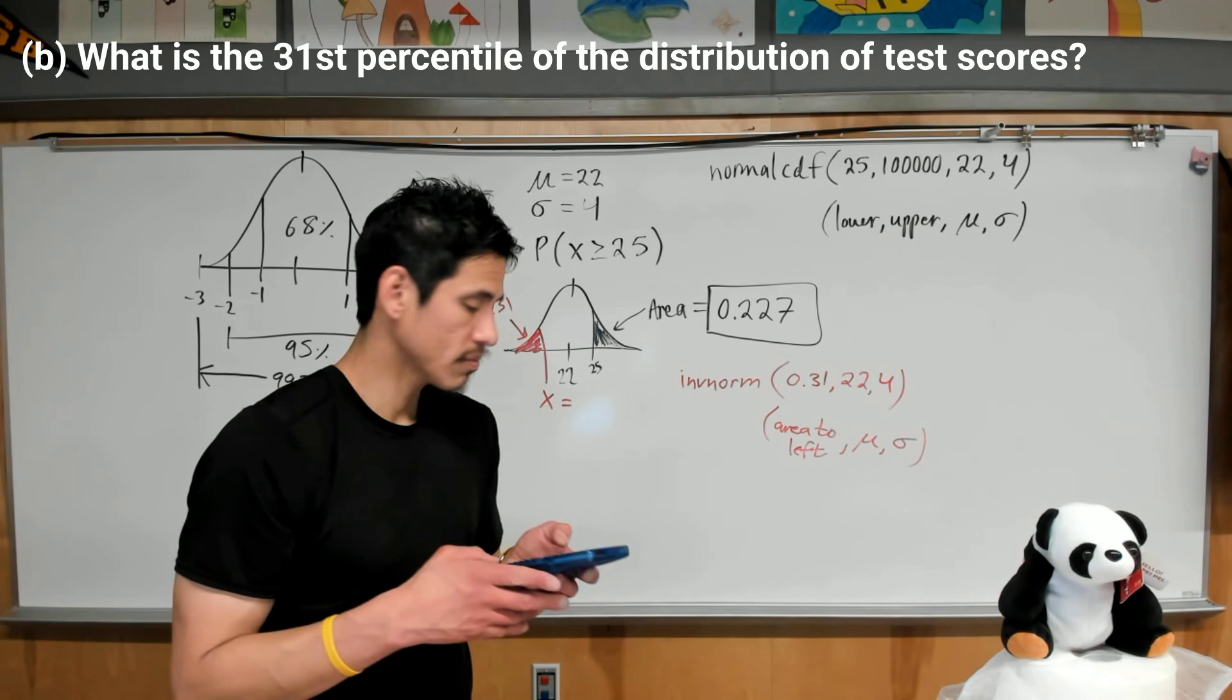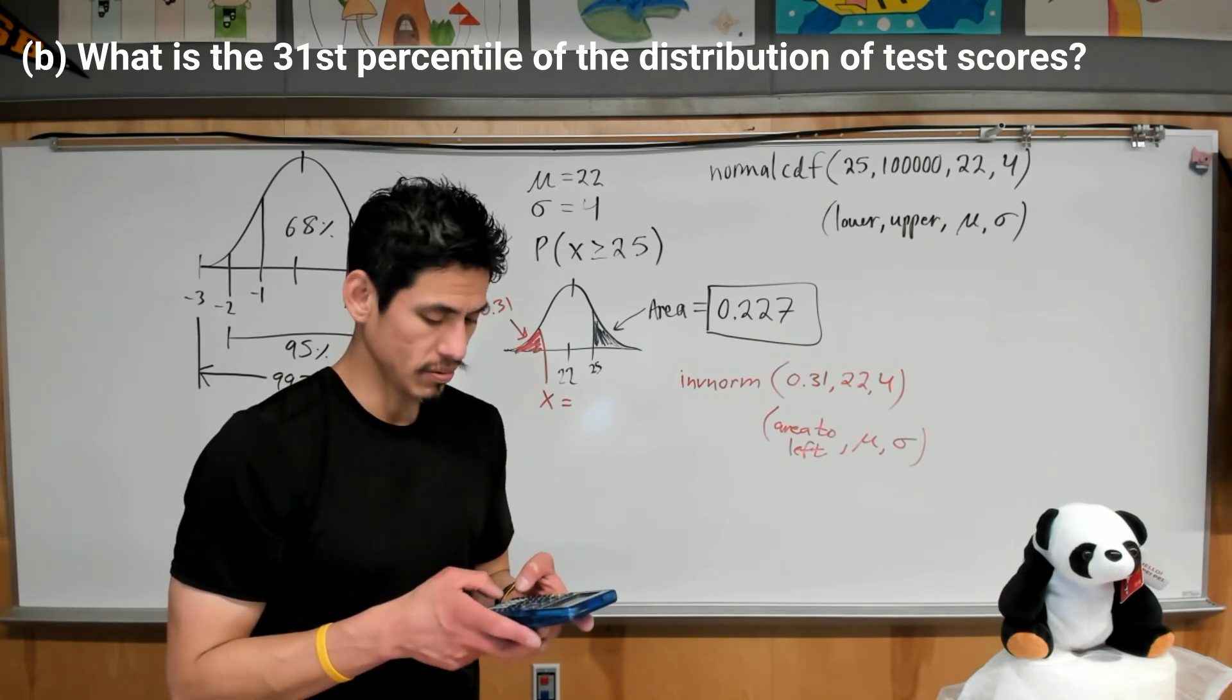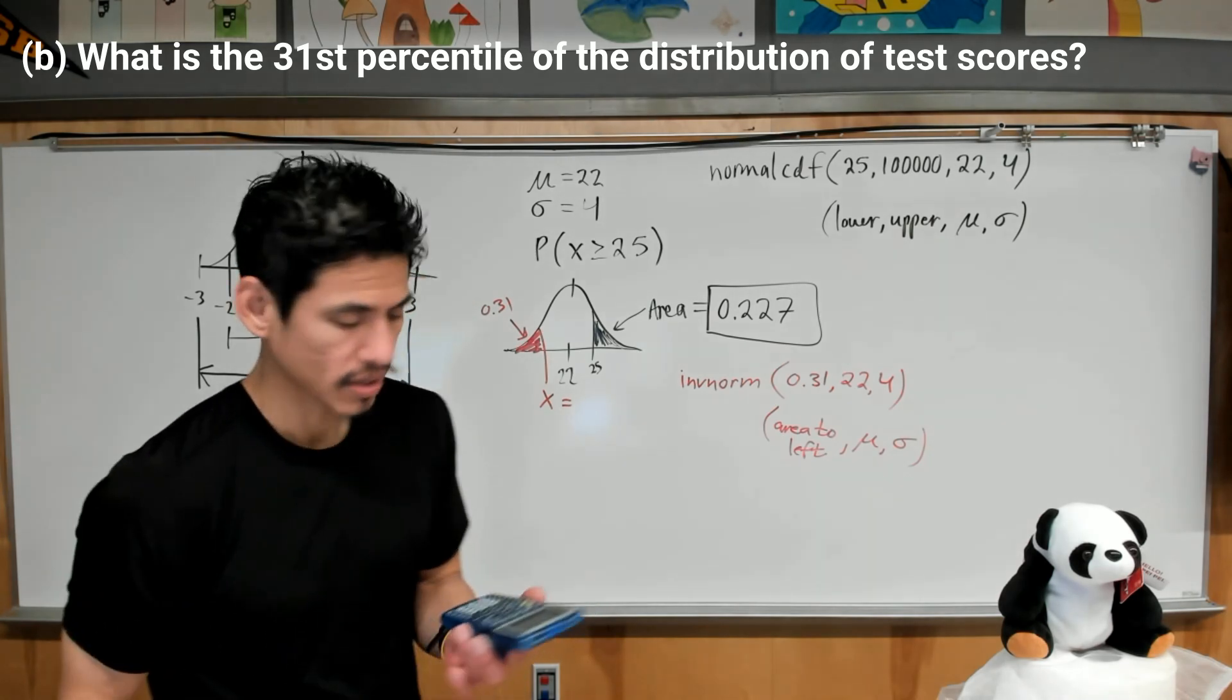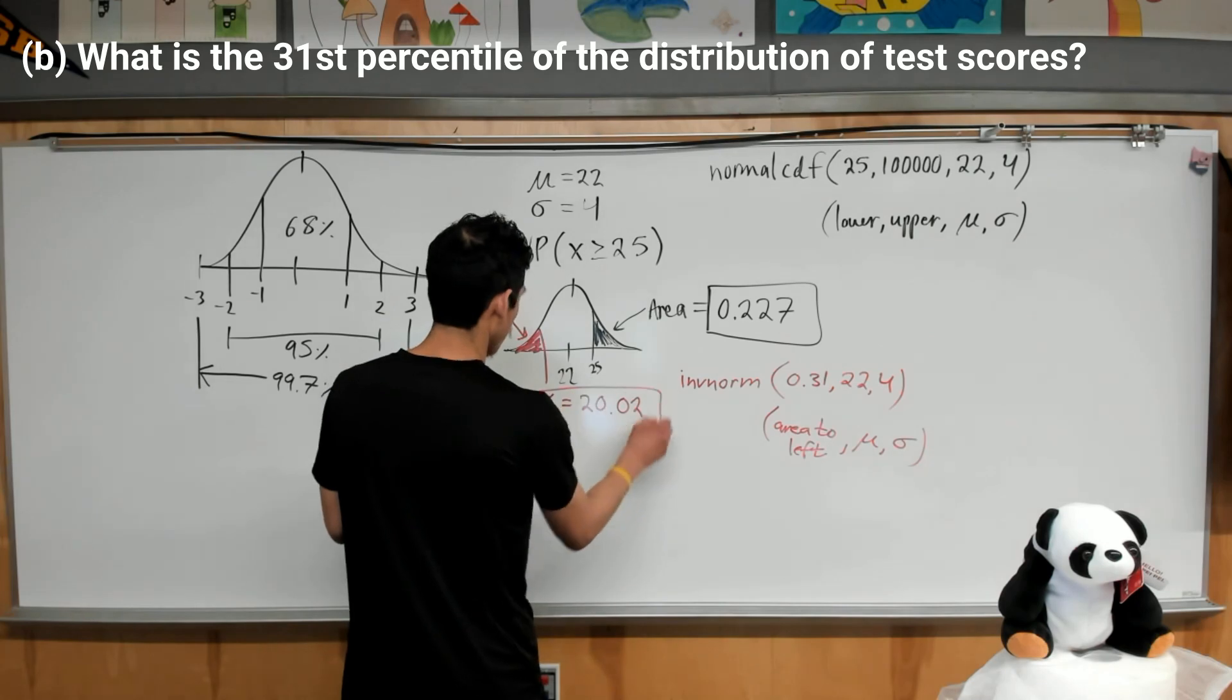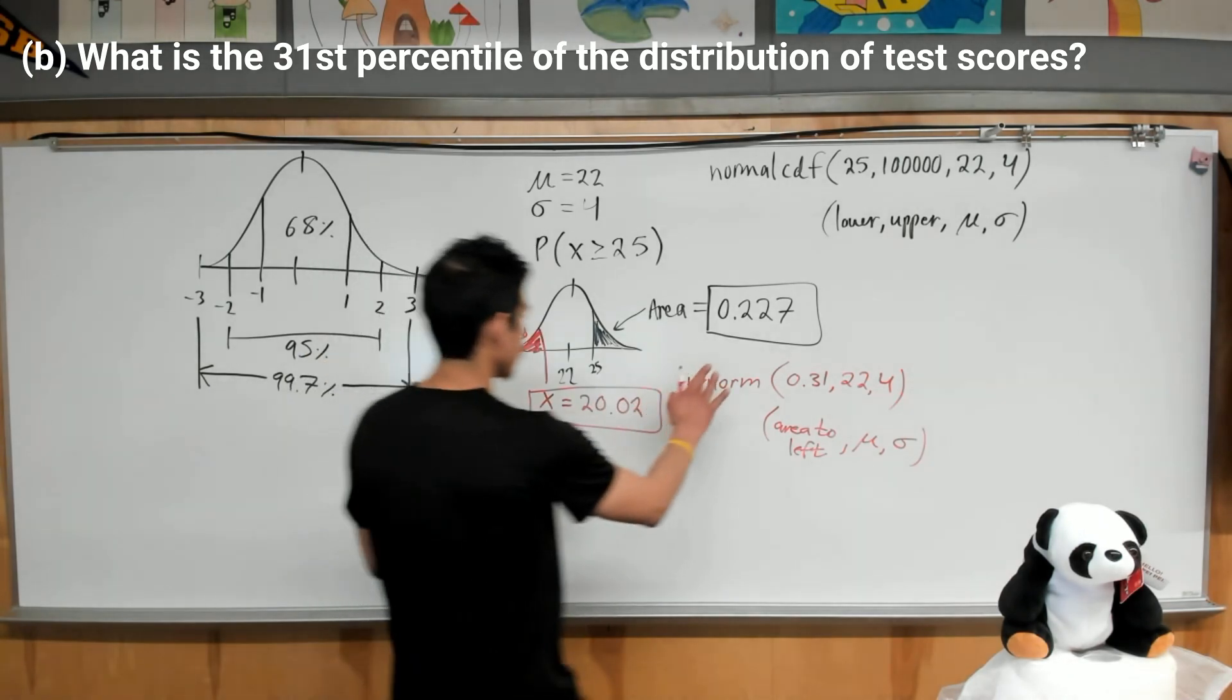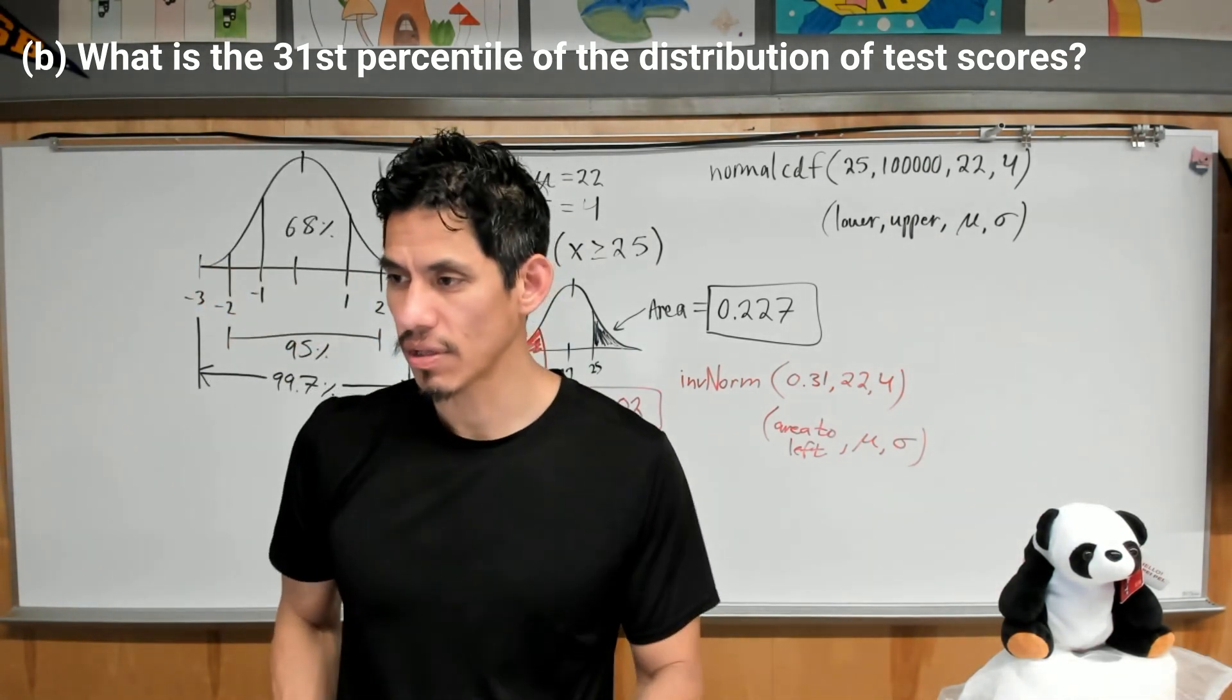Inverse norm. So 0.31, 22, 4. And we get right about 20.01. We'll go around to 20.02. So a score of about 20 will be in the 31st percentile. Alright, moving right along.